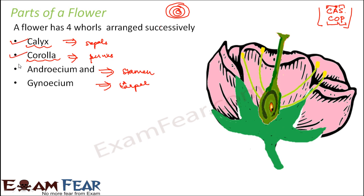So these are the four whorls of which a flower is made up. If you take a flower in your hand and look at the sepals — that is the Calyx, the outermost whorl — inside that are the petals, inside the petals are the stamens, and at the center you have the carpel. That is why it is said a flower is composed of four whorls.